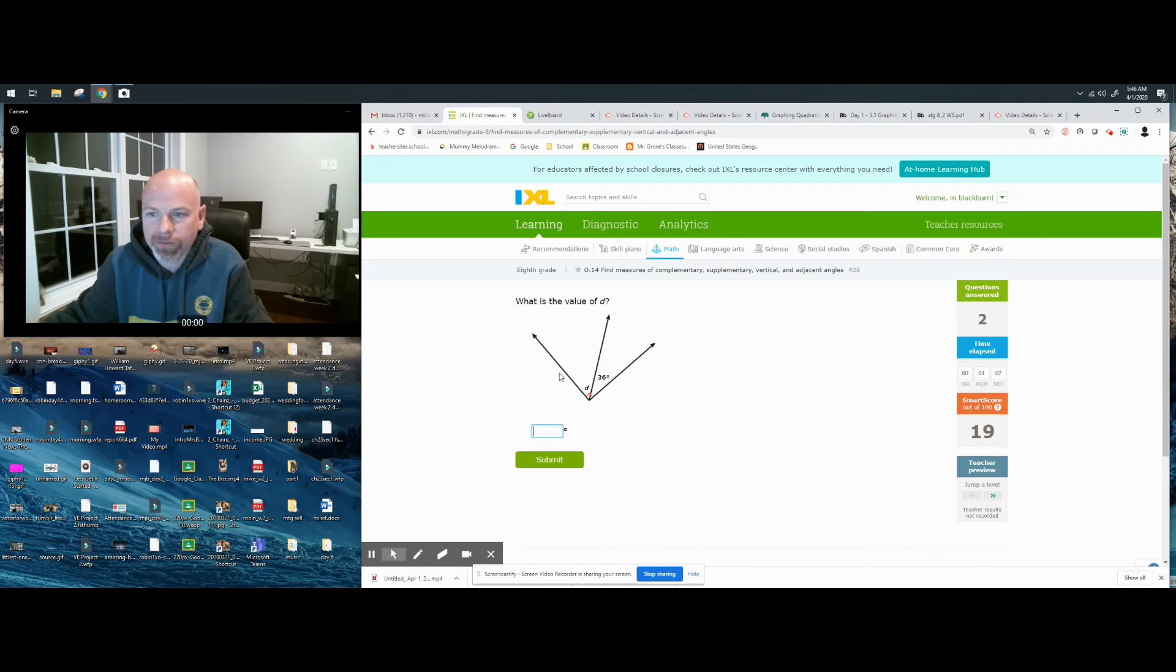What is the value of D? So we notice we're given a 90-degree angle indicated by this red box. This part of it is 36, the whole thing is 90. This is basically a complementary angles problem. They didn't use the word complementary, but you have to kind of make that connection. These are two angles that add up to 90, so 90 minus 36 is what?